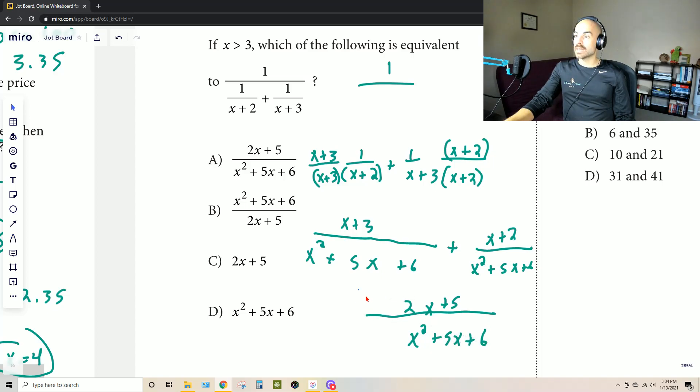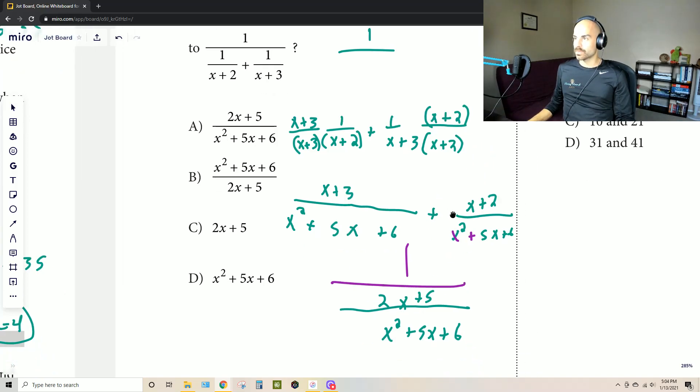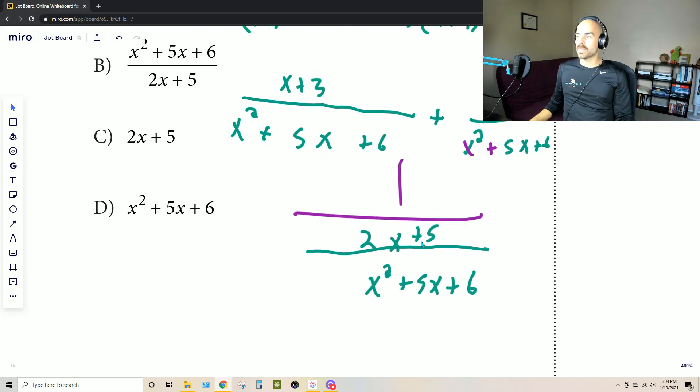Now, is this our answer? It's not. Remember, this is just the denominator and it's underneath 1. So to color code this and make it a little bit easier, we can actually recognize that this is 1 being divided by this fraction. This is 1 being divided by 2x plus 5 over x squared plus 5x plus 6. Which means that if you're really wanting to solve this, it's 1 times the reciprocal of that.